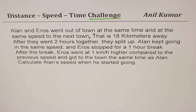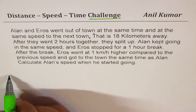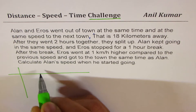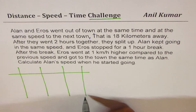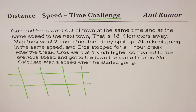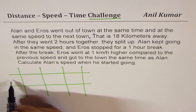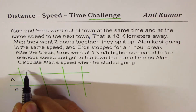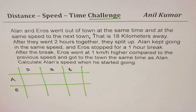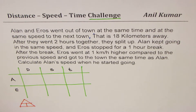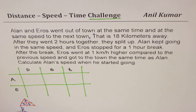You can pause the video, answer the question, and then look at my suggestions. For all distance-speed-time questions, I prefer to make a table — which you must have seen in my videos — with distance, speed, and time. I also prefer to write all the equations in product form, never in ratios. We have two persons, Ellen and Eros, and we know the relation: distance equals speed times time.